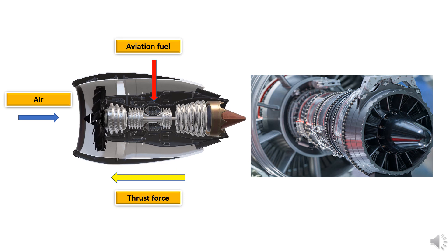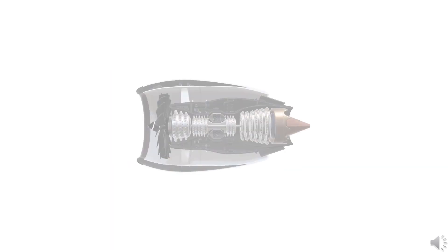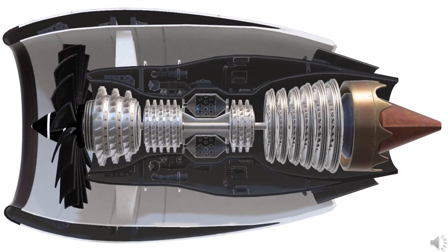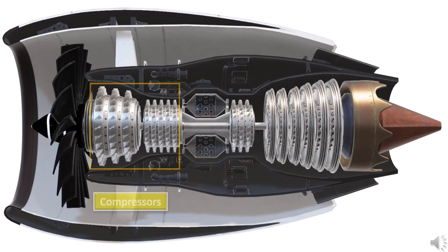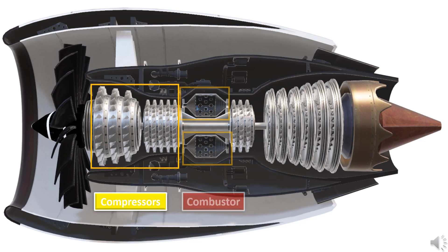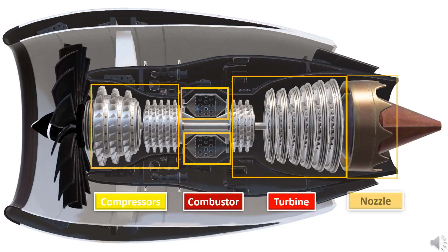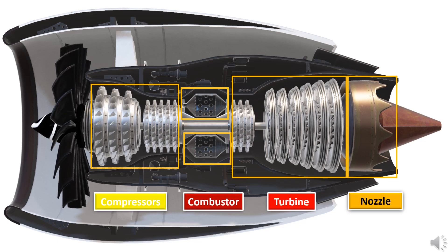The components used for producing thrust are different from an automobile's engine and are highly complex, manufactured with great precision. The basic components of a gas turbine engine are the compressor, combustion chamber, turbine, and a nozzle.